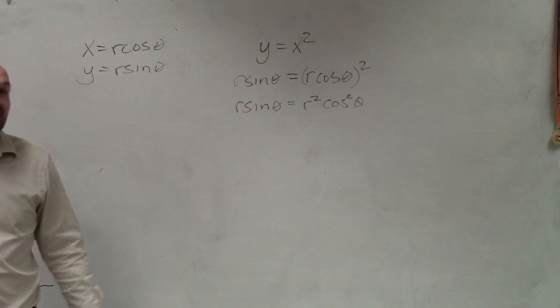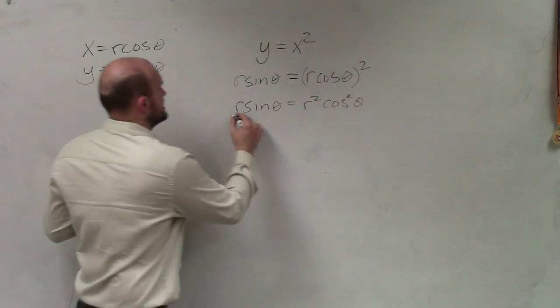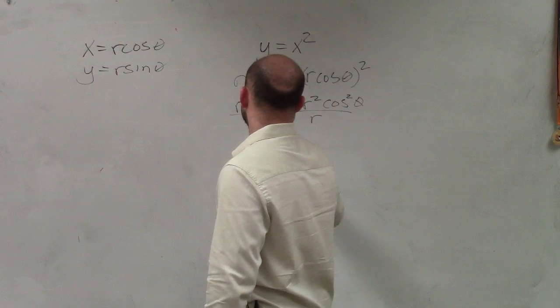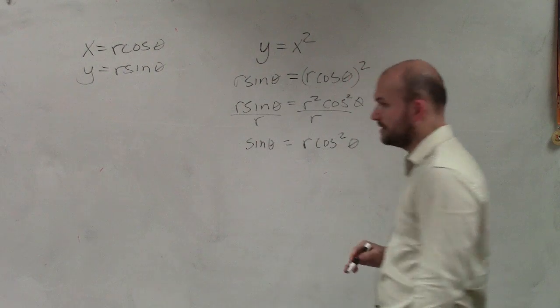Now, again, as I said, we need to solve for r. So I have an r squared and an r. In this case, I'm just going to divide by r. So therefore, I have sine of theta equals r times cosine squared of theta.